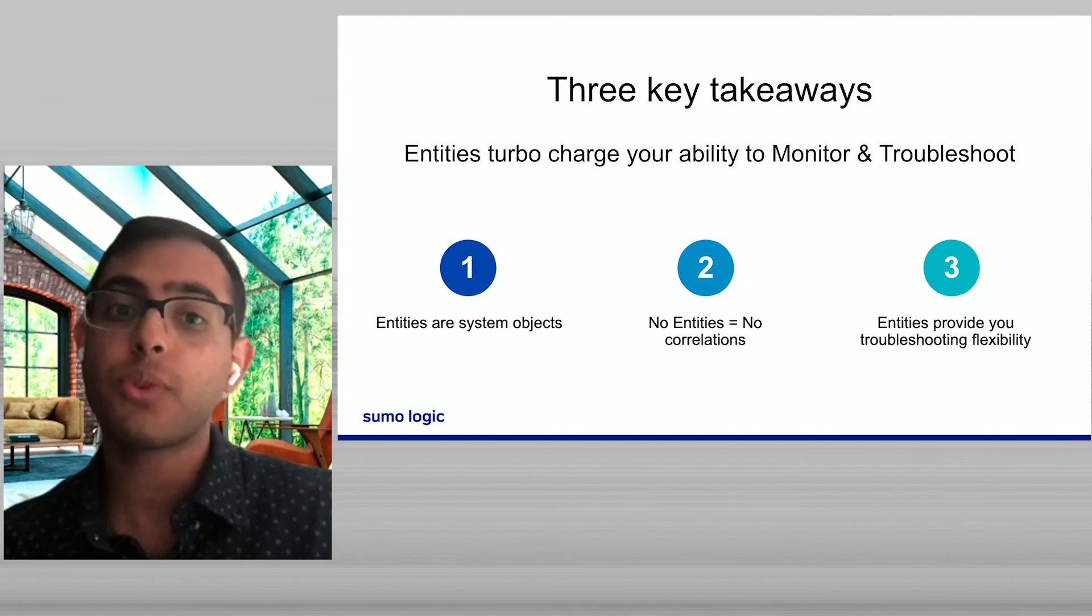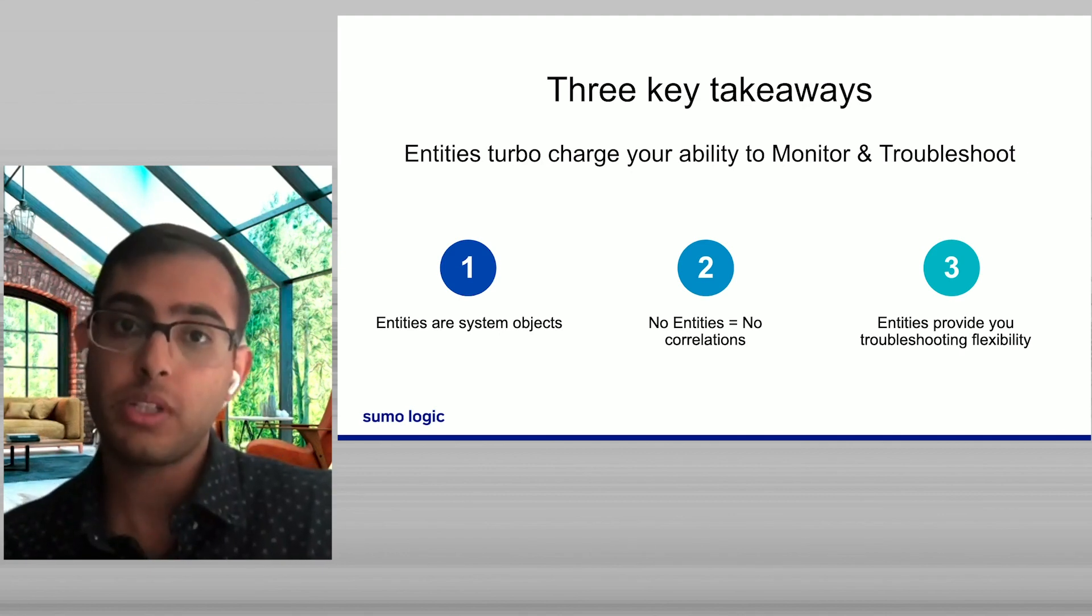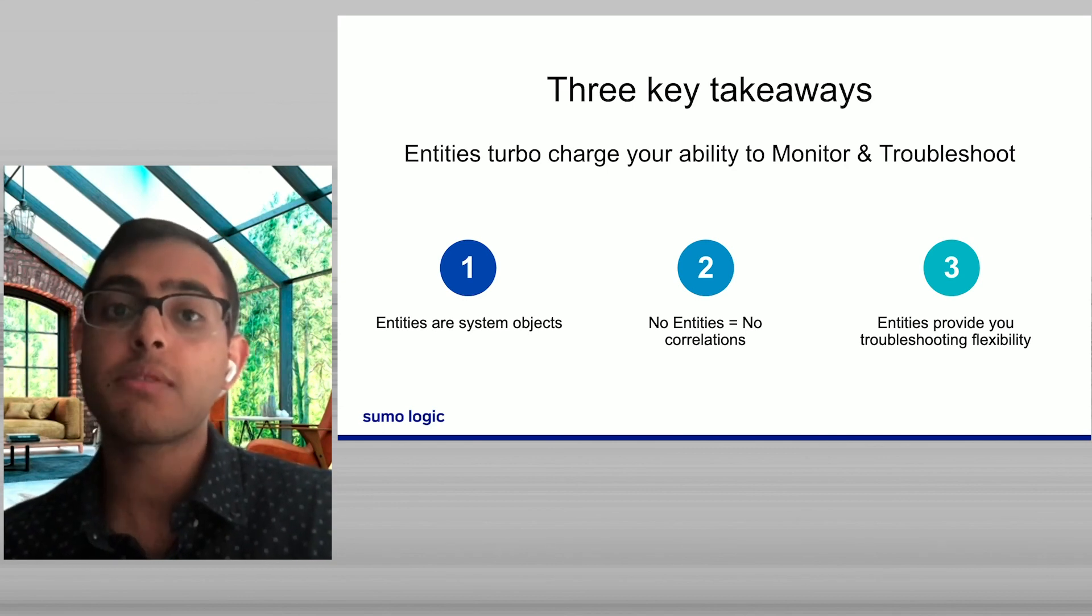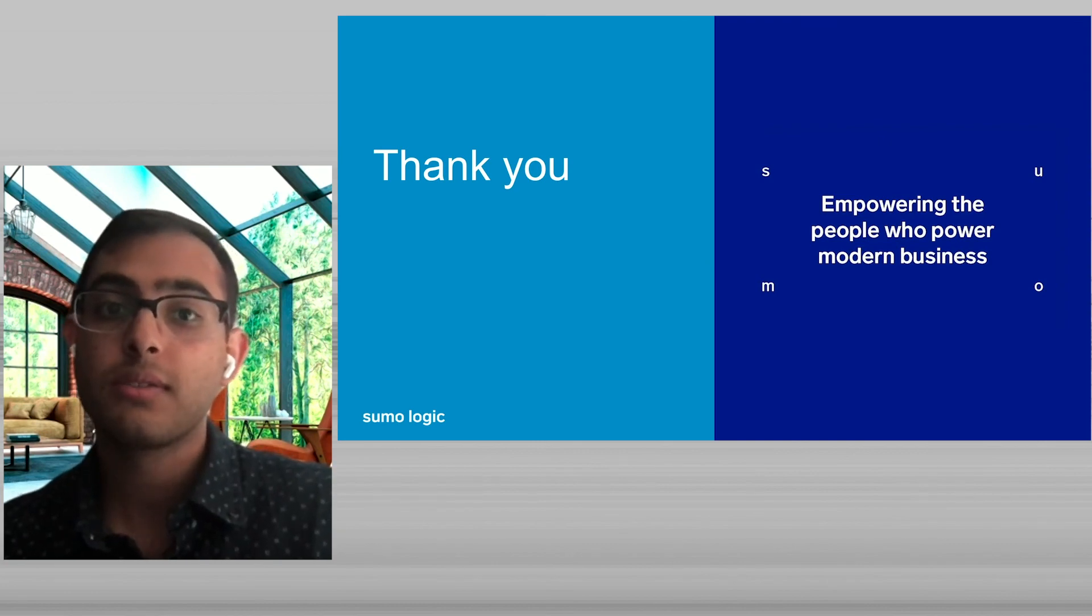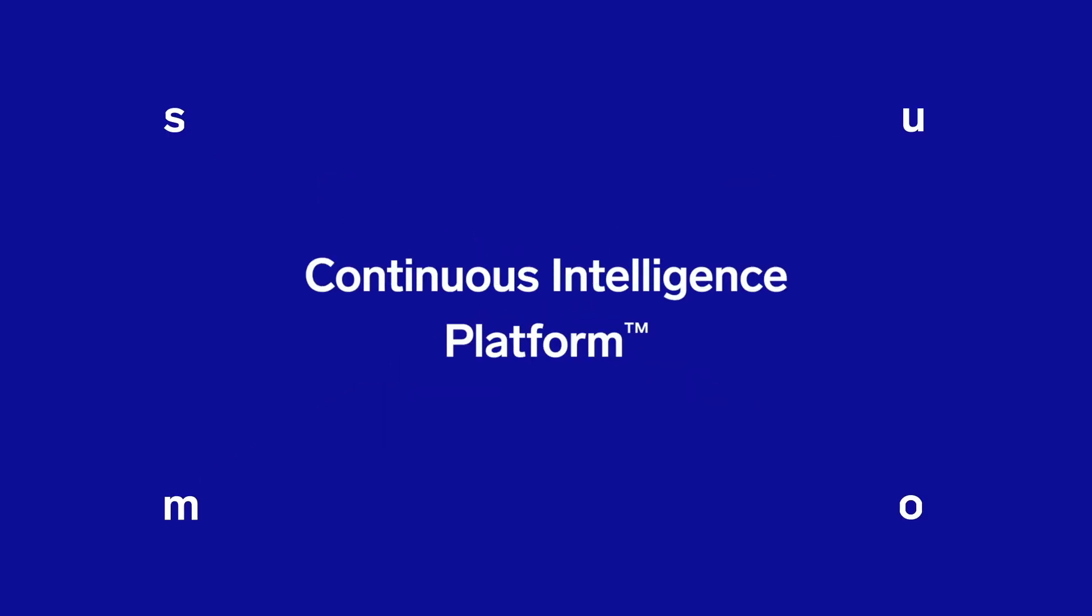As we wrap up this talk, I want to leave you with three key takeaways. Entities turbocharge your ability to monitor and troubleshoot because entities are system objects that describe the world as you see it. And without entities, you have no correlation capabilities. But with entities, we can provide deep correlations across these data streams. And because of these deep correlations, entities give you much higher levels of troubleshooting flexibility than you had before, providing you navigational pathways through your system components that were not easily present before. With that, I'd like to thank you for listening to my talk.